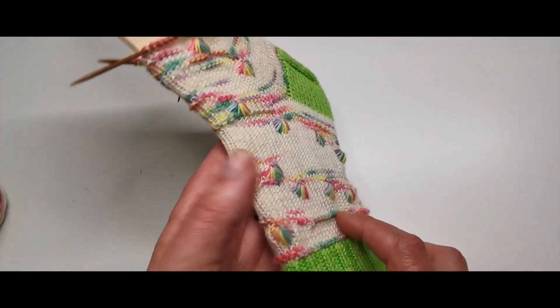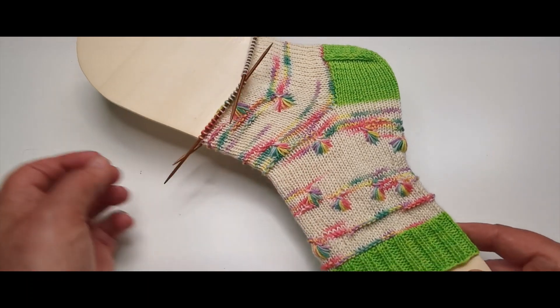Jeder Strang aus einer Handfärberei ist ja ein Unikat. Das bedeutet, dass bei jedem Strang, wenn der Regenbogen kommt, vielleicht ein halber Zentimeter später kommt oder früher kommt oder ein Zentimeter. Darum ist das eher ein Sockenrezept. Lass uns starten. Ich erzähle dir mal dabei meine Grundidee und wie ich das gemeint habe.